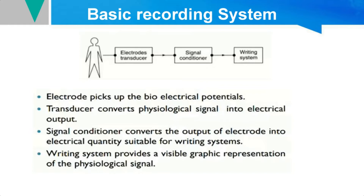The biological signal picked up by the electrodes is then passed through a transducer. The transducer converts any physiological signal into an electrical signal. This electrical signal is then given to a writing system or output unit through the signal conditioner. The signal conditioner modifies the input into a suitable form that can be understood by the display unit — which could be a pen recorder, a graphical chart, or a CRO where the biological signal output can be seen.